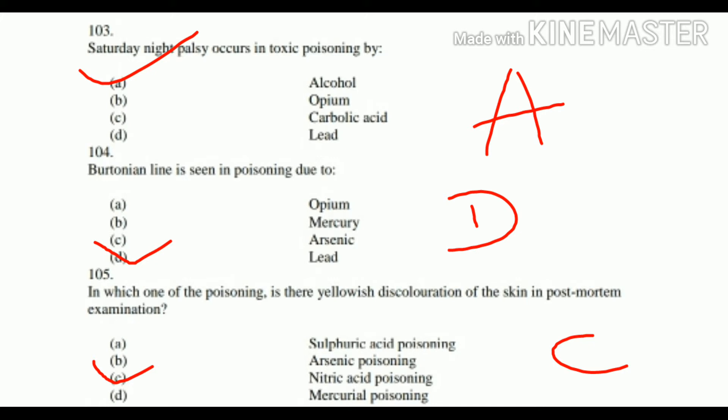Question number 105: In which one of the following poisonings is there yellowish discoloration of skin on post-mortem examination? Options: A. Sulfuric Acid, B. Arsenic, C. Nitric Acid, D. Mercurial Poisoning. The right answer is C. Nitric Acid Poisoning.